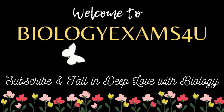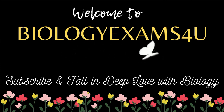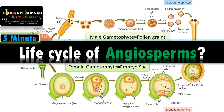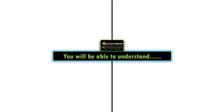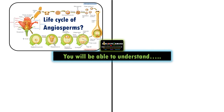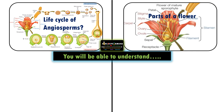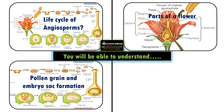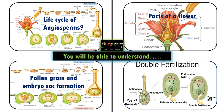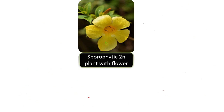Hi friends, welcome to biologyexams4u.com. Today we have an interesting topic: the life cycle of angiosperms. Within 5 to 10 minutes, you will be able to understand a simplified version of the life cycle of angiosperms, parts of a flower, how pollen grains and the embryo sac are formed, and what double fertilization in angiosperms means.